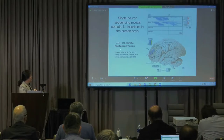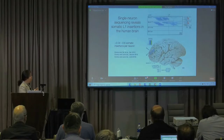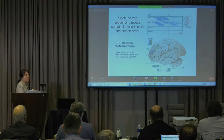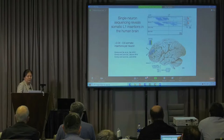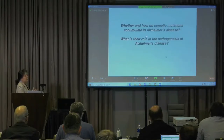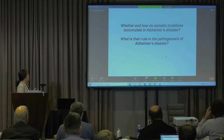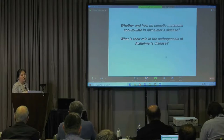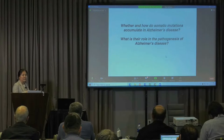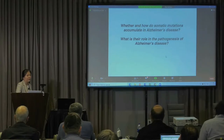We established a rate of less than one somatic Line 1 insertion per neuron in normally developing human brains. I was then fascinated by the power of single-cell genomics to examine neuronal genomes in more degenerative conditions. We set out to answer whether and how somatic mutations accumulate in Alzheimer's disease and other neurodegenerative conditions, and what their roles are. We are still in the beginning stages of answering these questions, but let me share what we found so far.